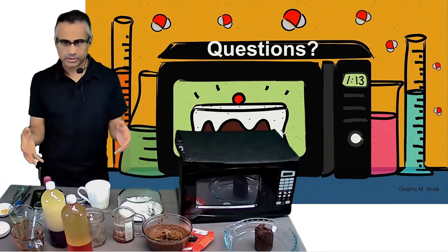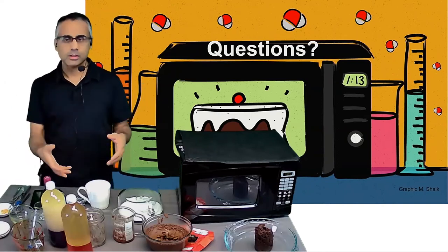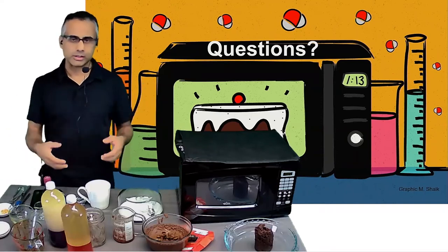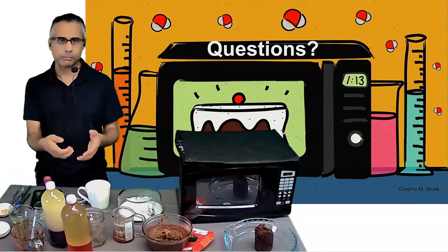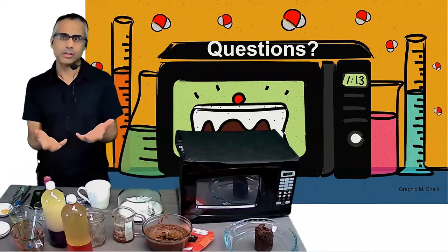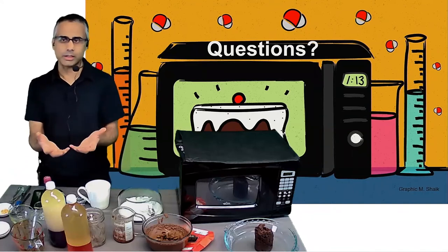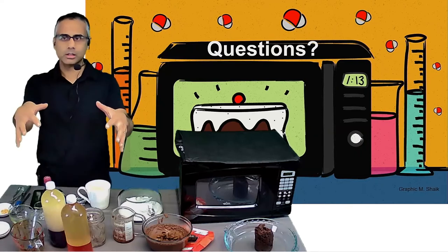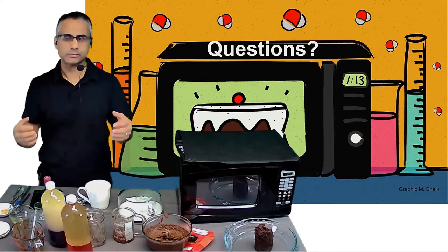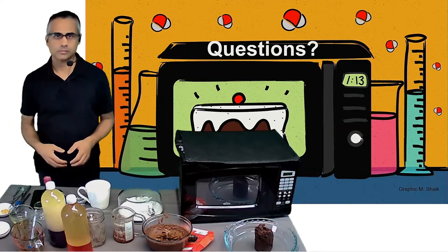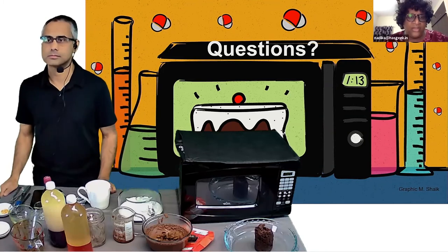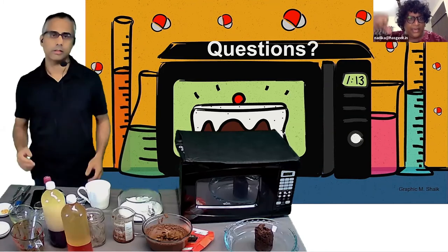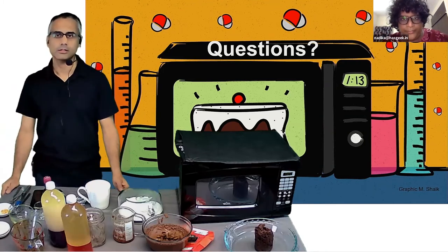Interestingly, you can simulate an oven with just a covered saucepan — that's essentially what a Dutch oven does. It's a large pot with a heavy lid on top.